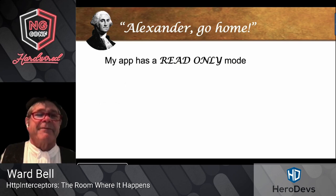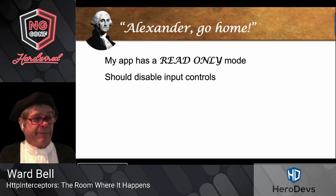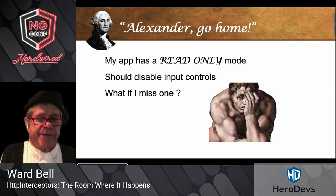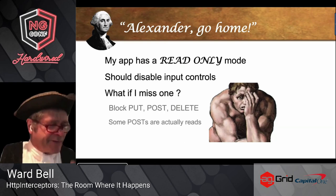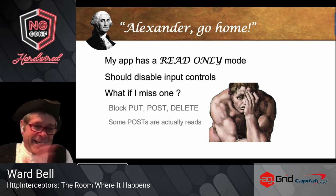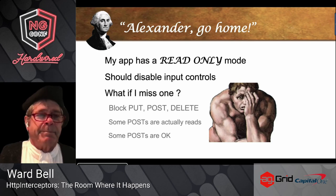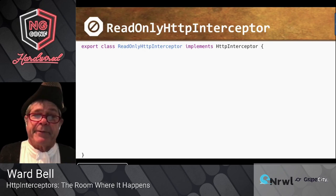The problem is: my app goes into read-only mode from time to time. While in read-only mode, I should disable input controls, but what if I miss one? I need a backup — I don't want a save request going to the server. So I'm going to block PUT, POST, and DELETE, although some POSTs are actually legacy GETs that need to get through, and some POSTs are analytics I don't need to stop. But basically, you get the idea.